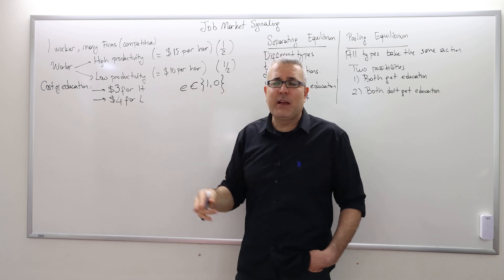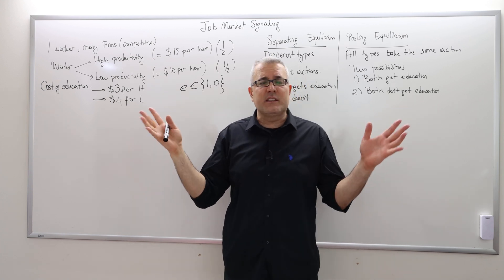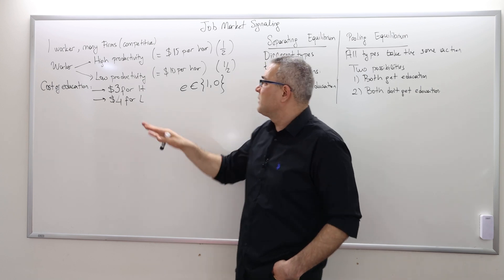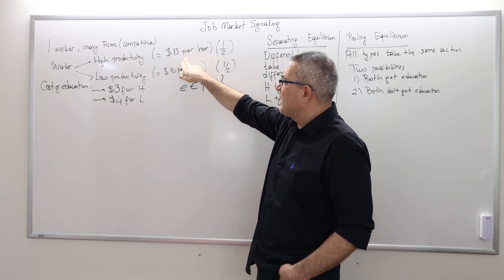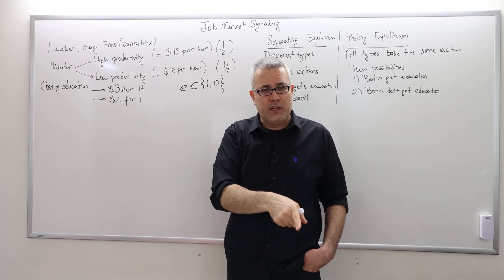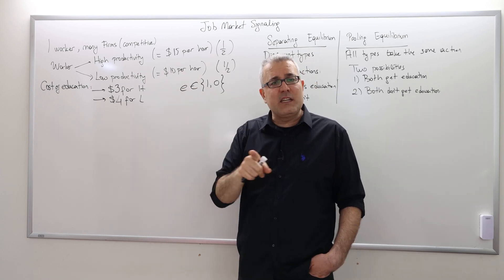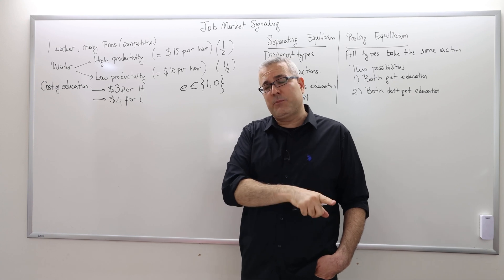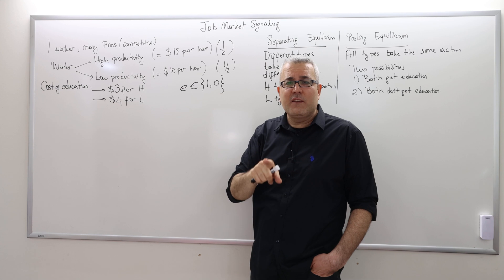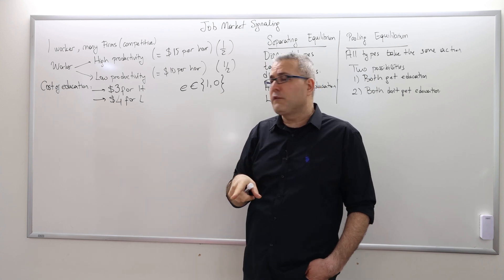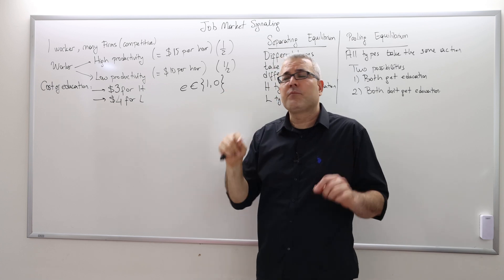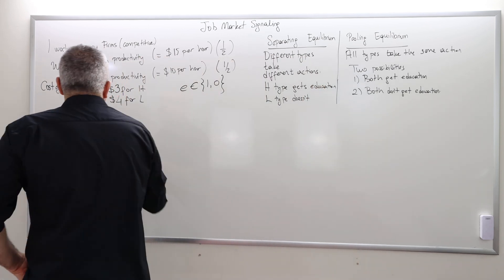Also, the high type is not a Sheldon-like genius — just a regular guy, but nevertheless more productive. This high-productivity guy brings $15 per hour for the company, and the low-productivity guy brings $10 per hour. So the high-productivity guy is still more profitable for firms, but the cost of education isn't that big across workers.